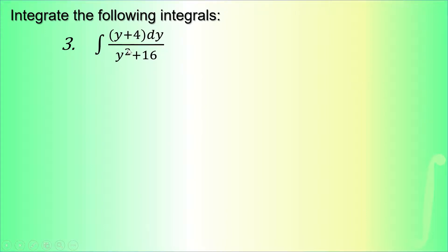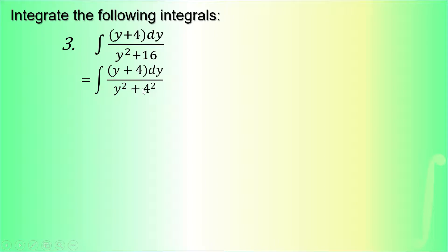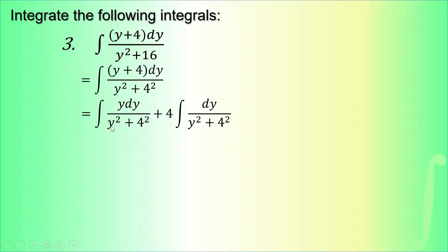Our third example is the integral of (y + 4) dy over (y² + 16). We identify u = y and a = 4, since √16 = 4, so the denominator is y² + 4². We cannot proceed directly with either inverse trig formula because we have the quantity (y + 4) on the numerator, so we separate into two integrals: y dy / (y² + 4²) and 4 times dy / (y² + 4²).